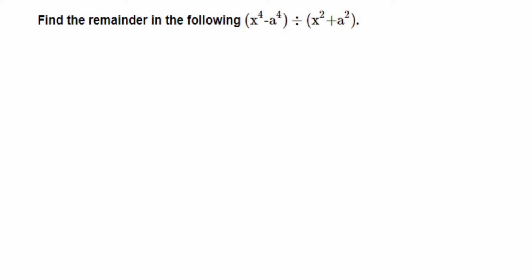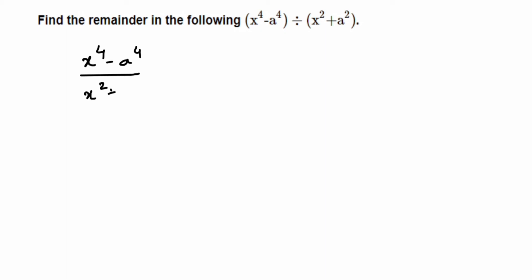Here's a question on factorization: find the remainder in the following — x to the power 4 minus a to the power 4 divided by x squared plus a squared. To solve this, I'm going to factorize the numerator. The denominator we cannot factorize further because we cannot apply any identity.